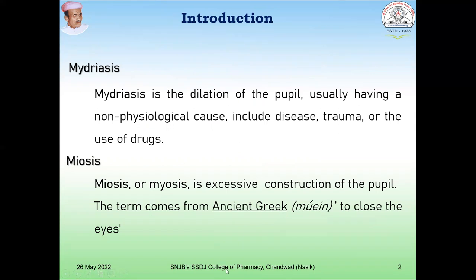Opposite to mydriasis is miosis. It is also called miosis — it is the excessive constriction of the pupil, and the term comes from the ancient Greek word meaning to close the eye.